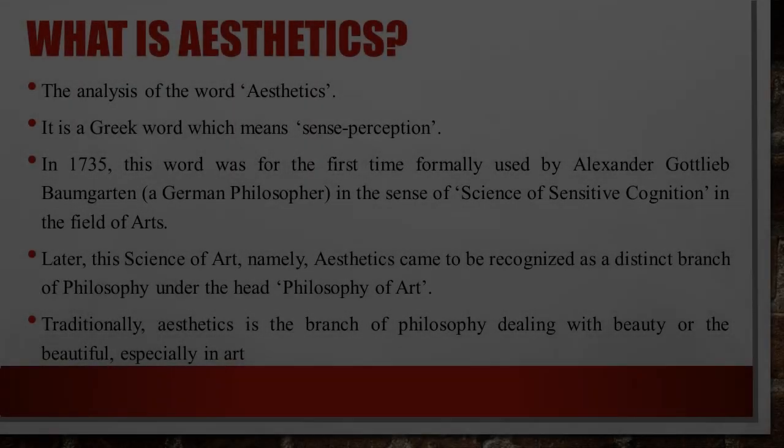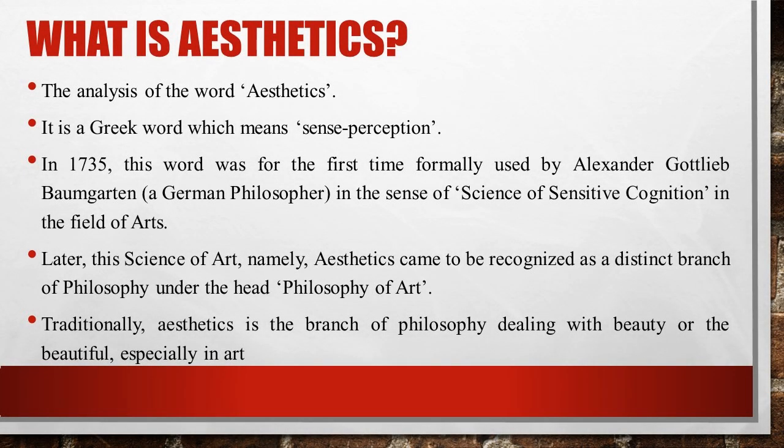Let us begin with the analysis of the word aesthetics. Generally, it is associated with the field of art. It is a Greek word which means sense perception. Anything that is given to the senses is known as aesthetics. In 1735, this word was for the first time formally used by Alexander Baumgarten, a German philosopher, in the sense of science of sensitive cognition in the field of arts. Later, this science of art, namely aesthetics, came to be recognized as a distinct branch of philosophy under the head philosophy of art.